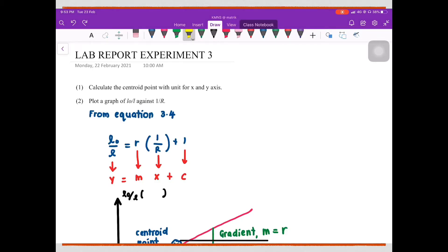Okay, so we want to discuss how to write lab report for experiment 3. First, calculate the central point with unit for the x and y axis.